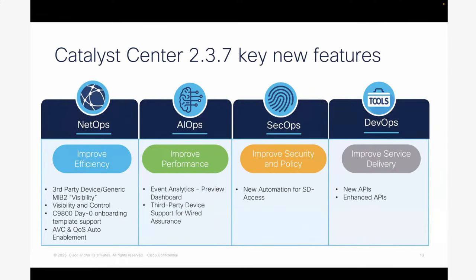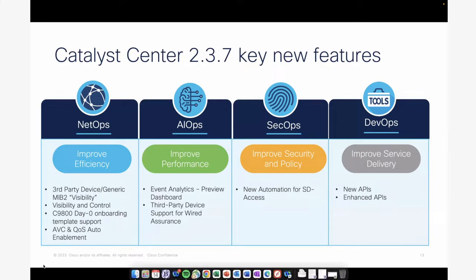As you saw on the agenda slide, we have divided the features into four different personas: NetOps, AIOps, SecOps, and DevOps. The features shown here are not a comprehensive list — we've picked some of the main features, but I recommend you go take a look at the release notes for 2.3.7, which has a comprehensive list of all new features under each persona in addition to the platform itself.